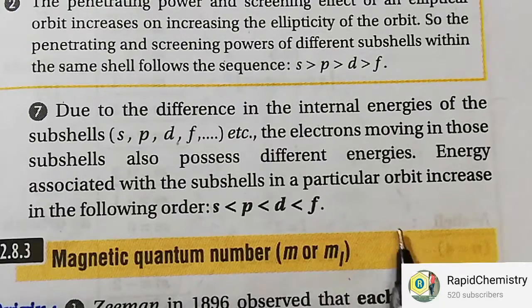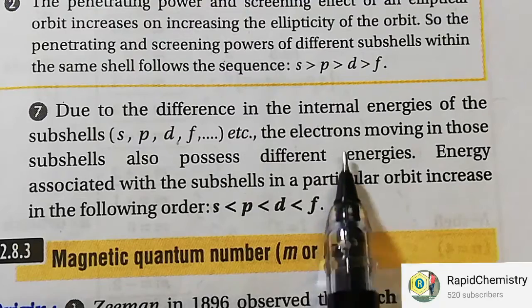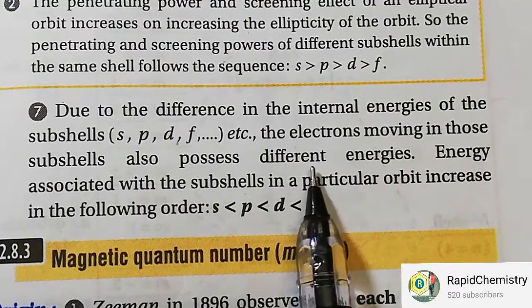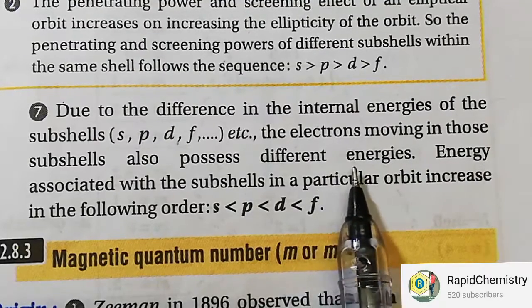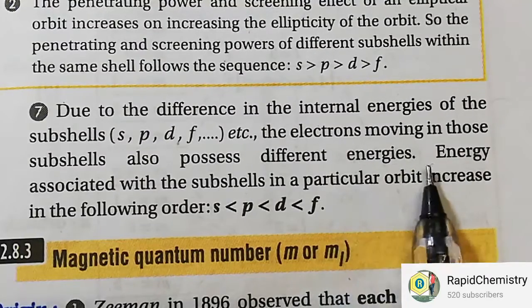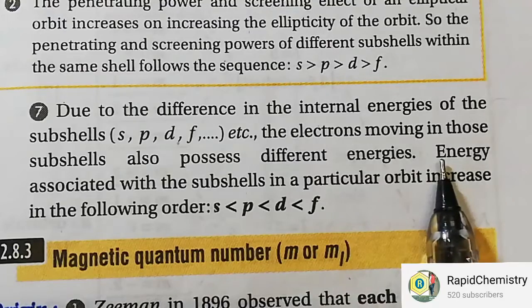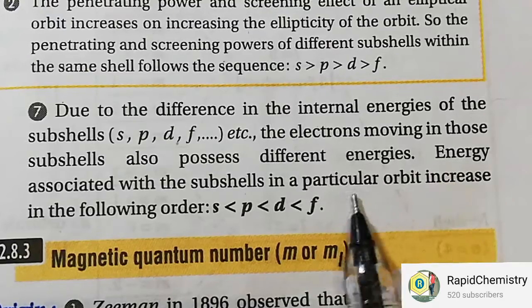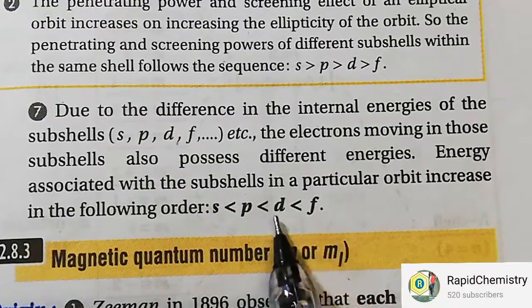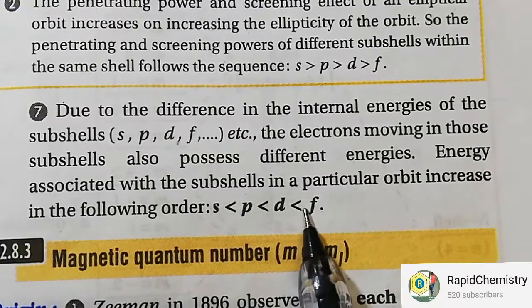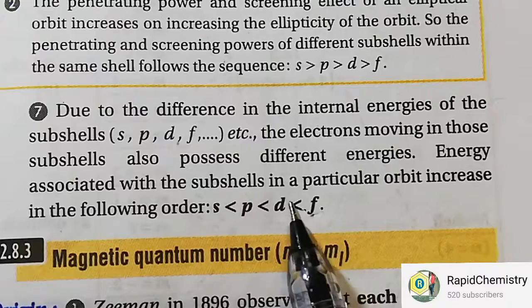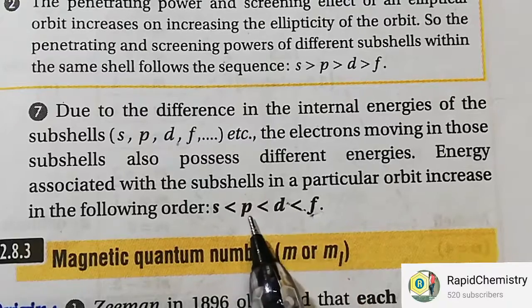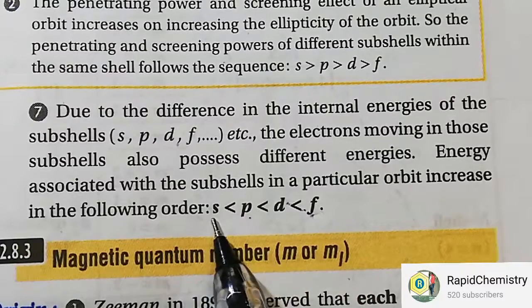All these subshells bear different energy levels. It has been found that the F subshell has maximum energy, then D, then P, and then S.